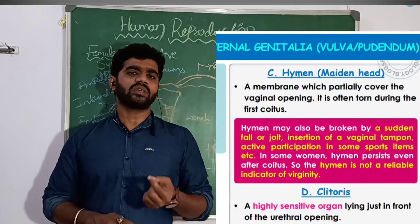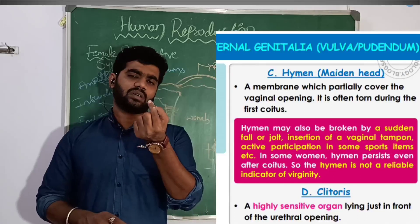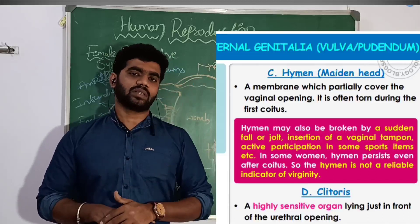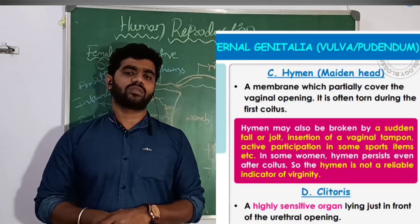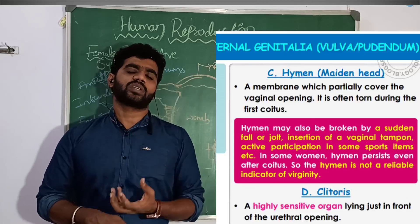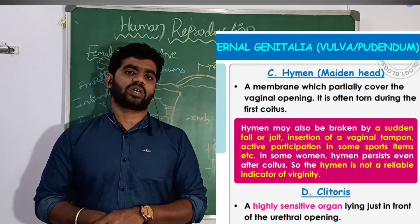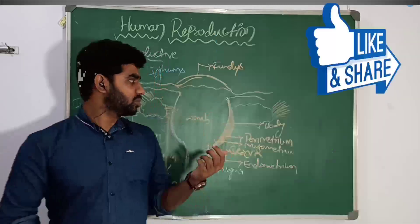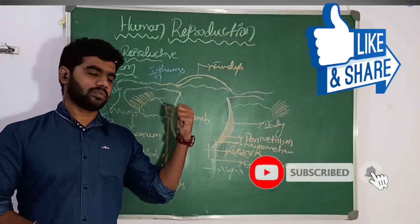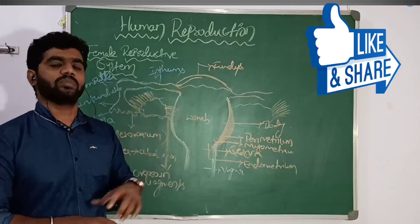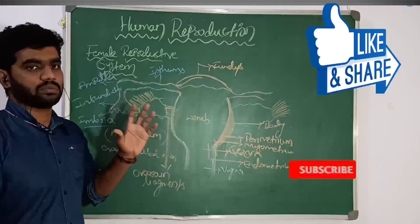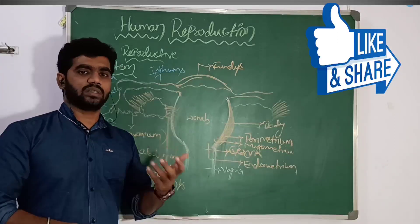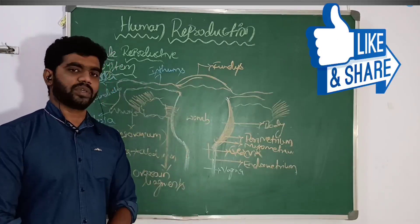The clitoris is a sensitive organ and is a very sensitive part during sexual intercourse. So that is about the female reproductive system. Next there is the mammary gland, which we will discuss in another video. Thank you.